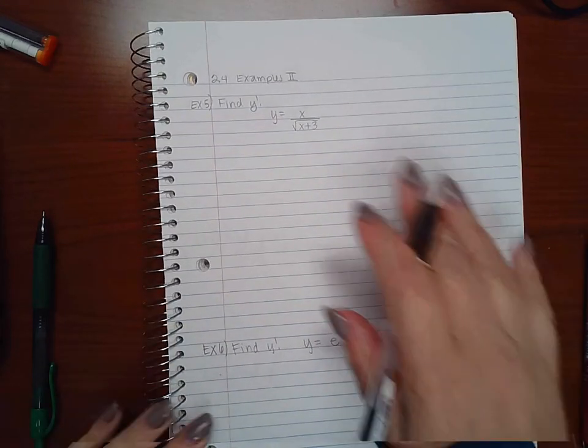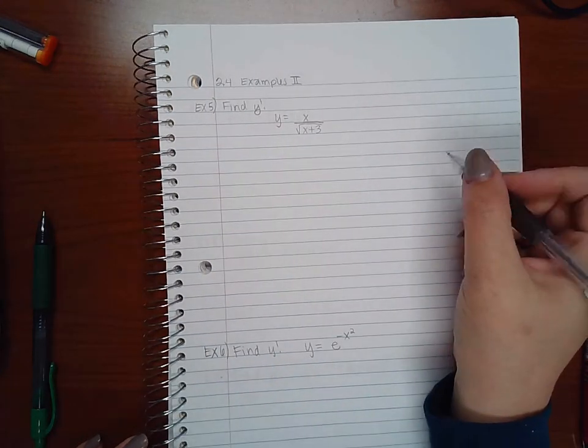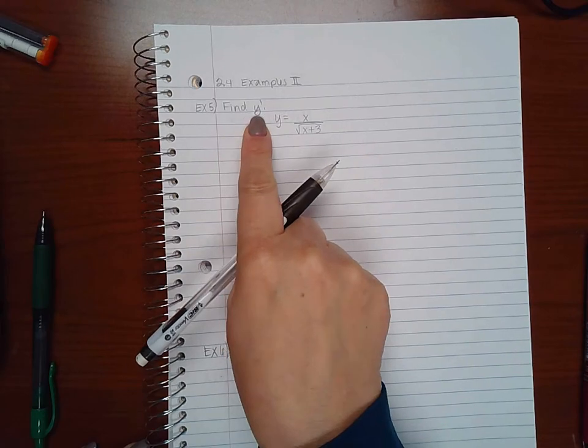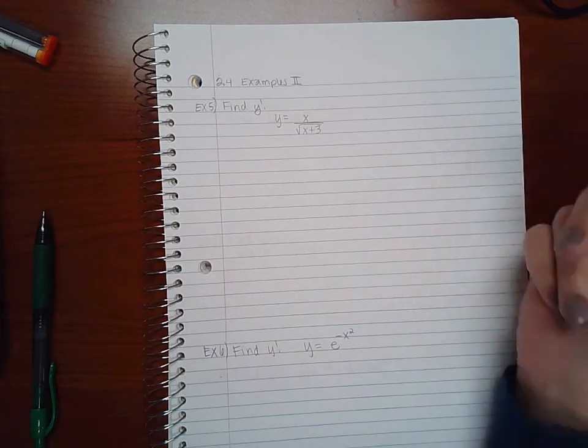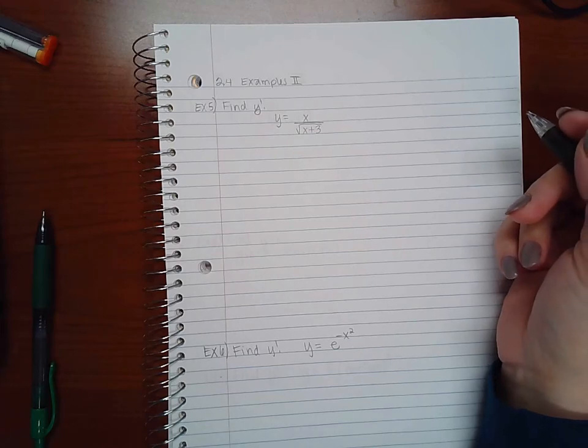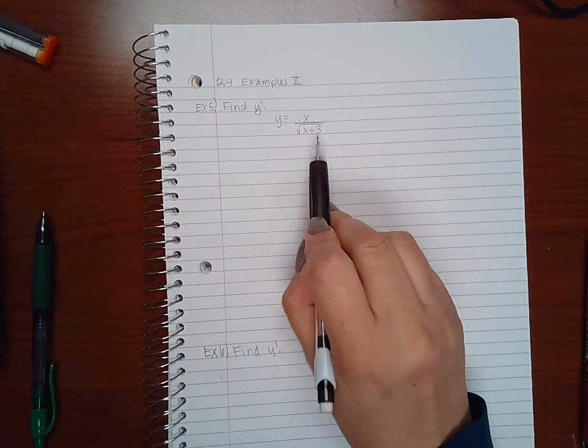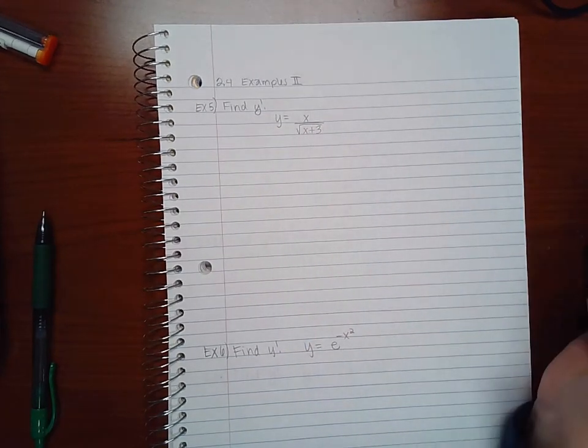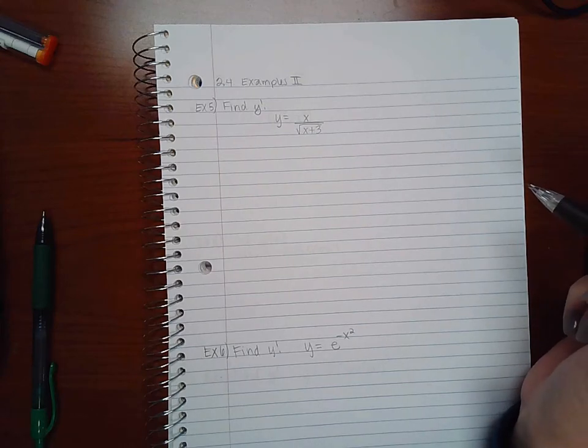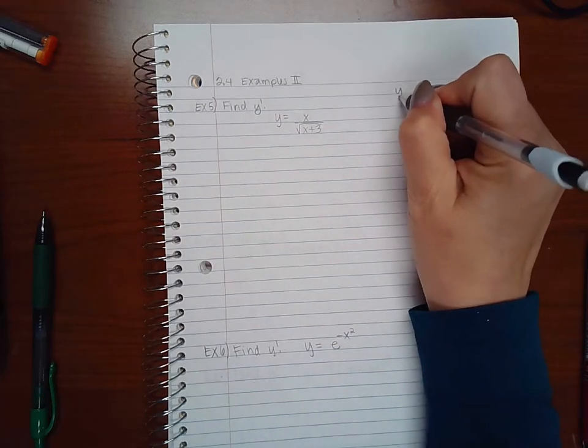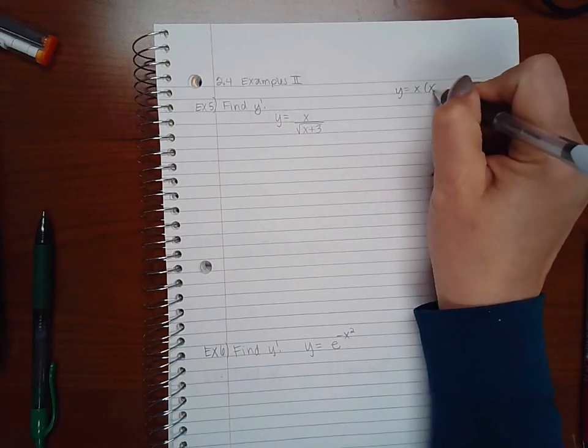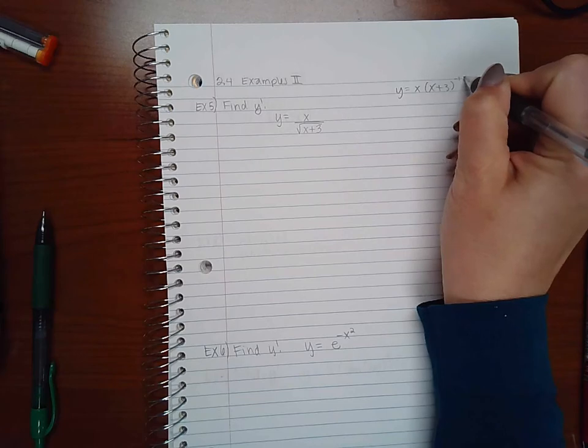Okay, this video is more examples from the chain rule. So here it says find y prime, so find the derivative of this function. You have to use chain rule because you have an inner function inside a square root function, but if you'd like to use the product rule you can do that by changing the function into x times (x+3) to the negative one half.